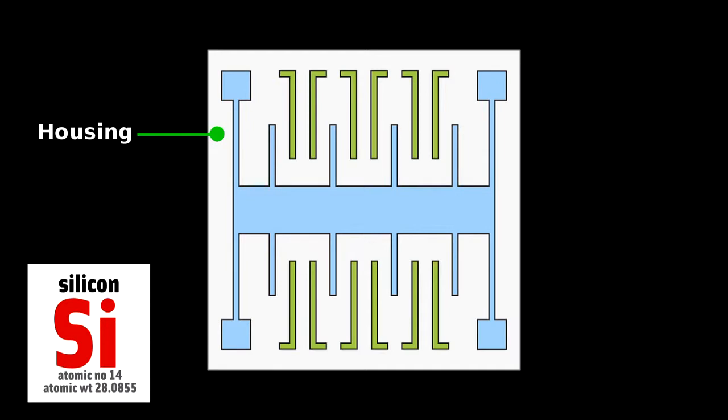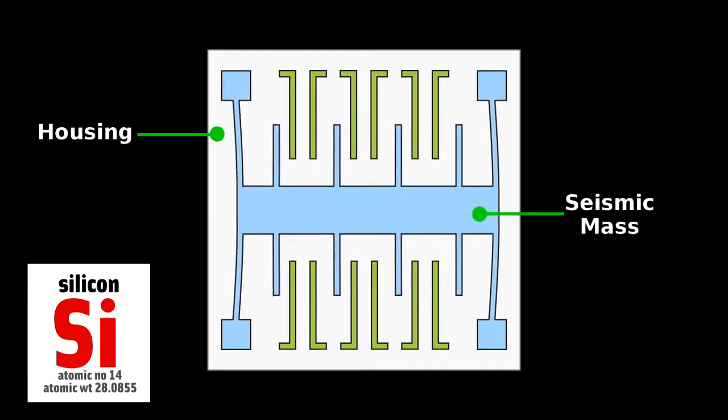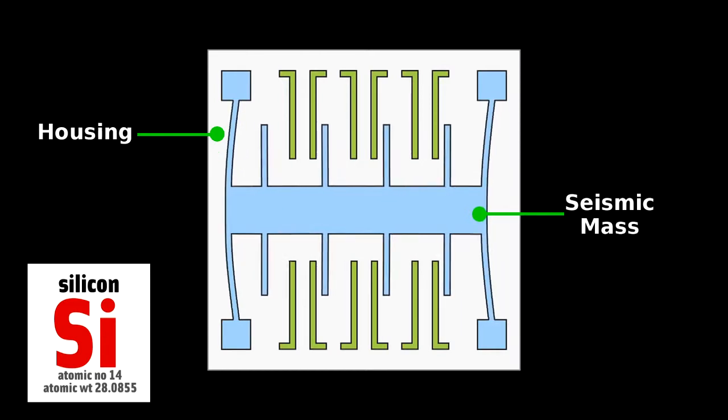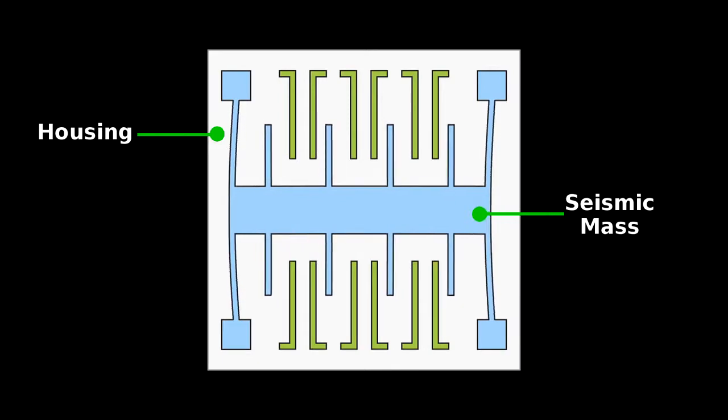It has, of course, a housing that's fixed to the phone and a comb-like section that can move back and forth. That's the seismic mass equivalent to the ball. The spring in this case is the flexibility of the thin silicon tethering it to the housing.